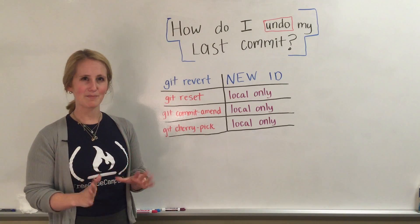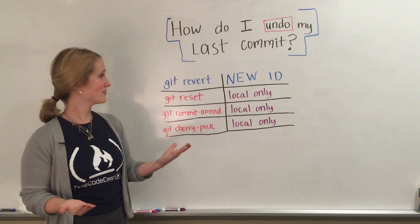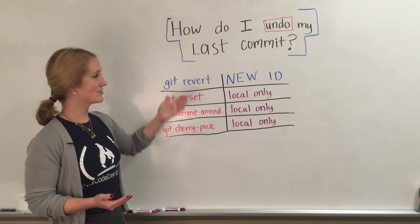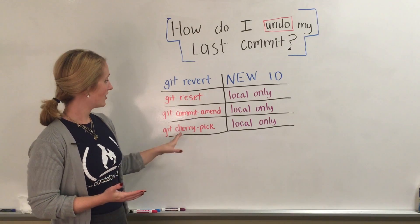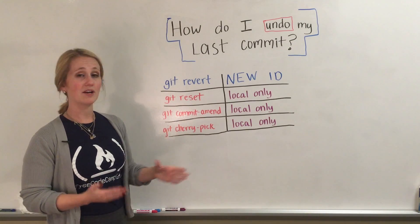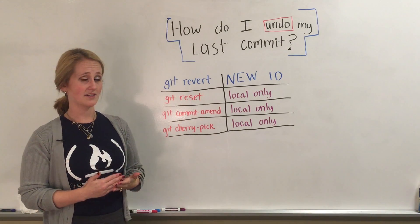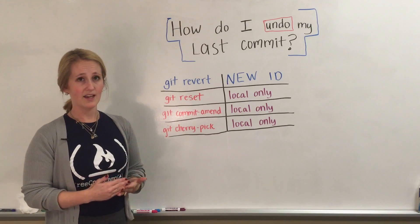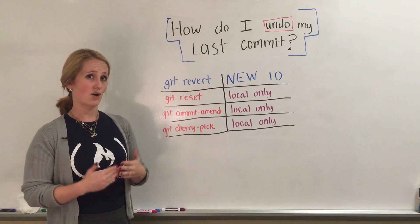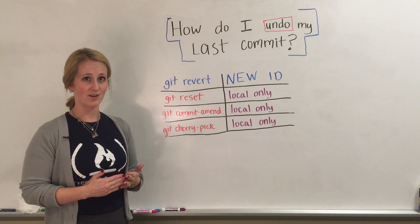So to recap: if you want to undo a commit, git revert is the best way to go. There are other options, but always be cognizant if you're changing a commit ID and that commit is on the remote repository.